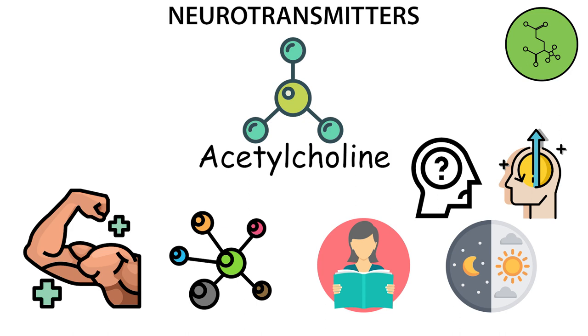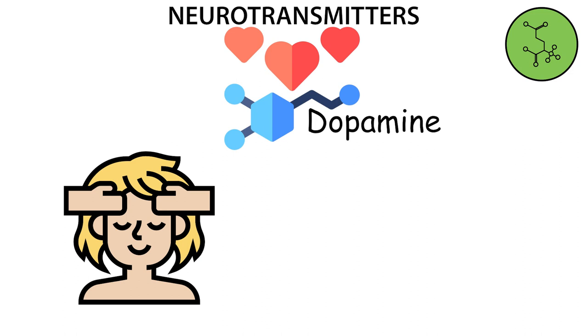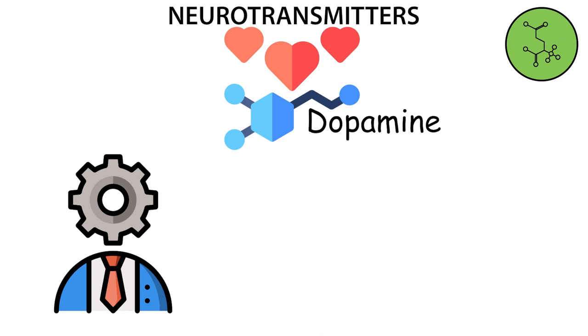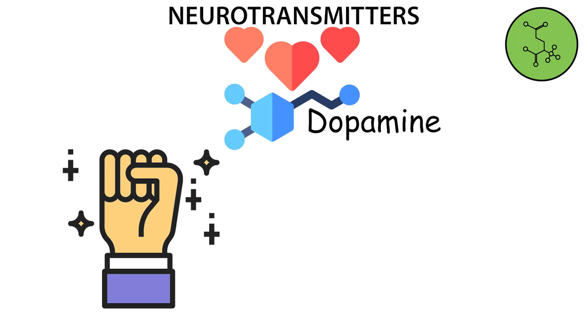Dopamine. It is related to pleasure and feelings of relaxation. Dopamine's main functions include the regulation of memory, learning, and it has an important role in decision-making. Motivation and curiosity are also related to this neurotransmitter.